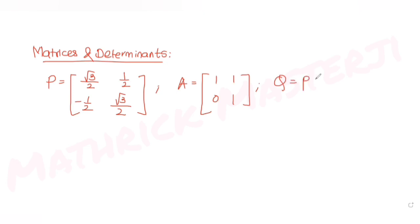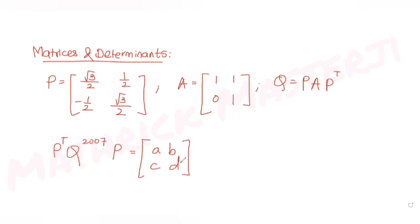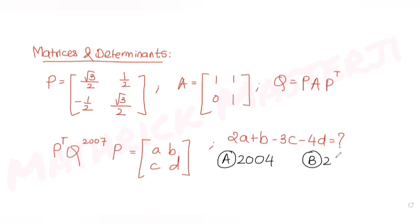One more condition is given: Q = P·A·Pᵀ. The question also gives us that Pᵀ·Q^2007·P equals a matrix [a,b; c,d], and asks us to find the value of 2a + b - 3c - 4d. The answer choices are 2004, 2006, 2007, and 2005.